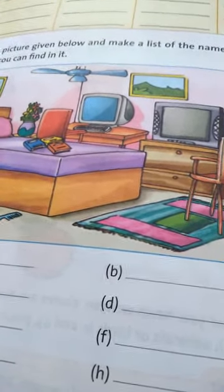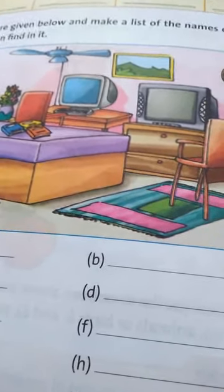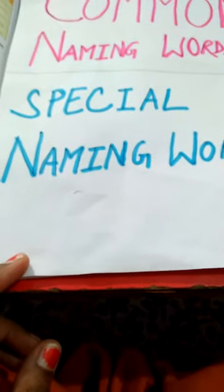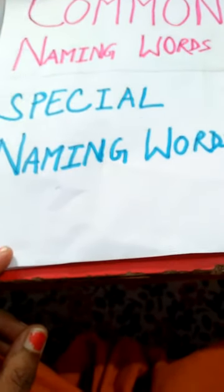But if we talk about something special, for example, if we are talking about a city that we live in, we can't understand which city we are talking about because city is a common name. But if we tell that we live in Patna, it means Patna is a special name for the city. Special naming words can recognize more clearly.